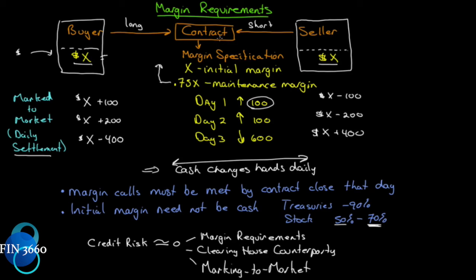Number two: the clearing house is counterparty to all contracts, and the clearing house has never defaulted on anybody. And number three: being that everything is marked to market, in the worst-case scenario of a default, the worst that could happen is you would be out one day's profit. So you have to settle up every day. The clearing house as counterparty and the margin requirements together mean that credit risk is near equal to zero.